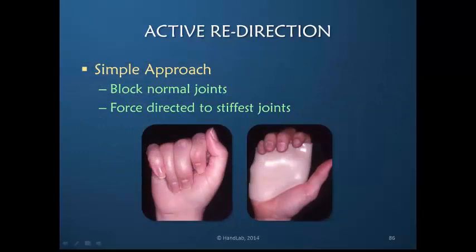Active redirection is very simple and it just blocks normal joint motion to redirect the force to the stiffest joints. In this example with interosseous muscle tightness, it is just redirecting the force to the interphalangeal joint extrinsic flexion to elongate the interosseous muscles. No passive stretching is required.